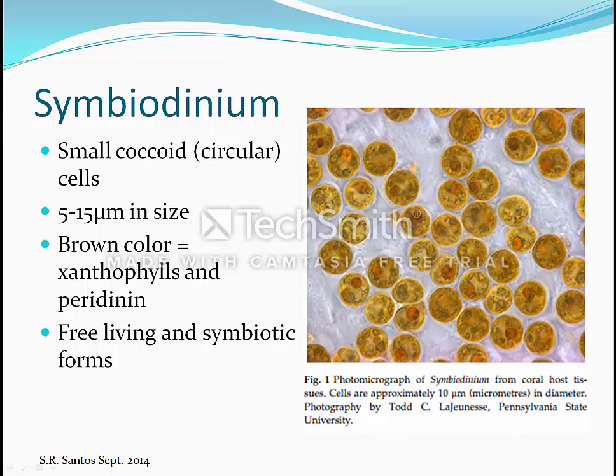In this case, it is thought to be a single worldwide species because they're mostly nondescript brown coccoid circular cells as seen here. They receive their brown color from their accessory pigments diatoxanthin and peridinin. They range from 5 to 15 microns and have both free-living and in-symbiote non-motile forms.